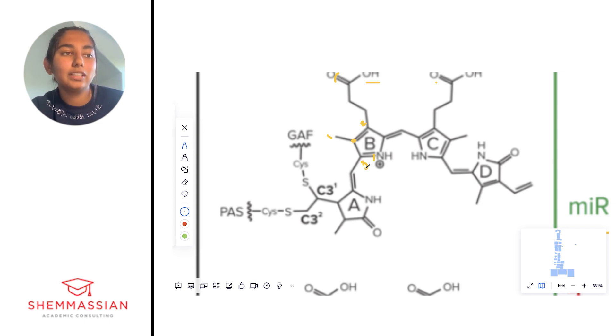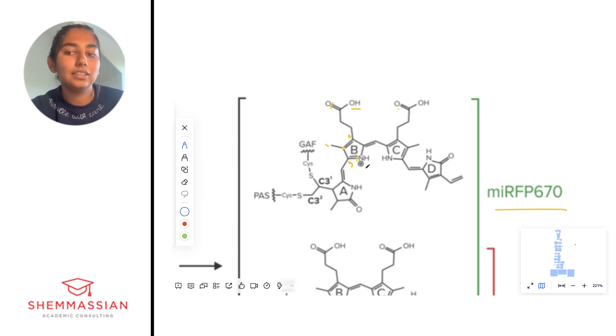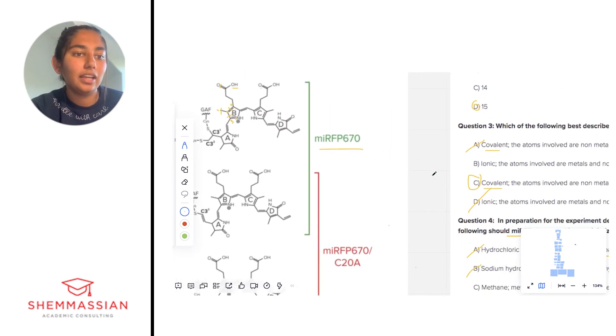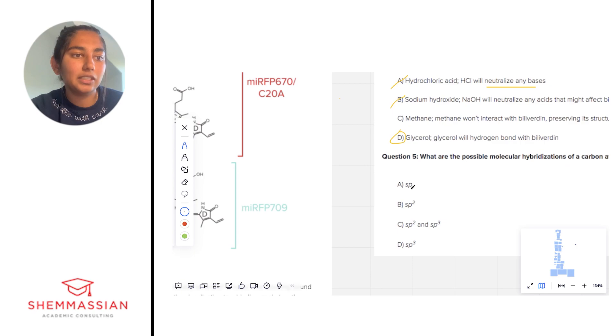We want to think about what its hybridization is. We will say it is SP2. That is an SP2 carbon that we are looking at. If we look at the answer choices, SP2 is one of the choices, so we're going to go ahead and go with that.